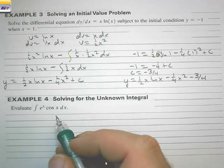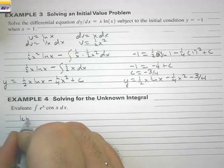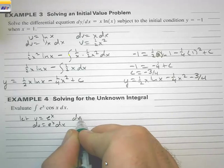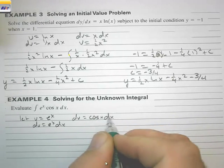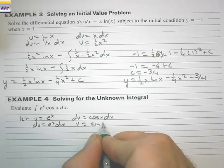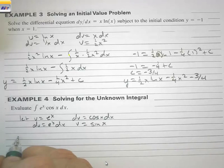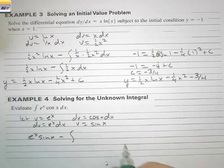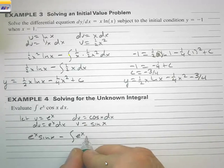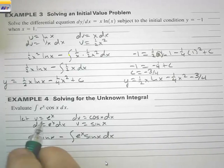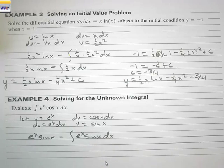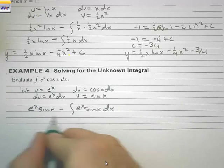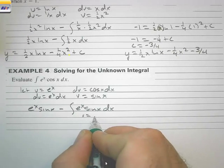Example 4: solving for the unknown integral. We let u equal eˣ, so du equals eˣ dx. We let dv equal cos(x) dx, giving v equals sin(x). Now we have uv equals eˣ·sin(x), minus the integral of v du, which is the integral of eˣ·sin(x) dx. We didn't get very far because instead of eˣ·cos(x) we now have eˣ·sin(x), so we didn't really accomplish much with this first step. Let's do the process again.